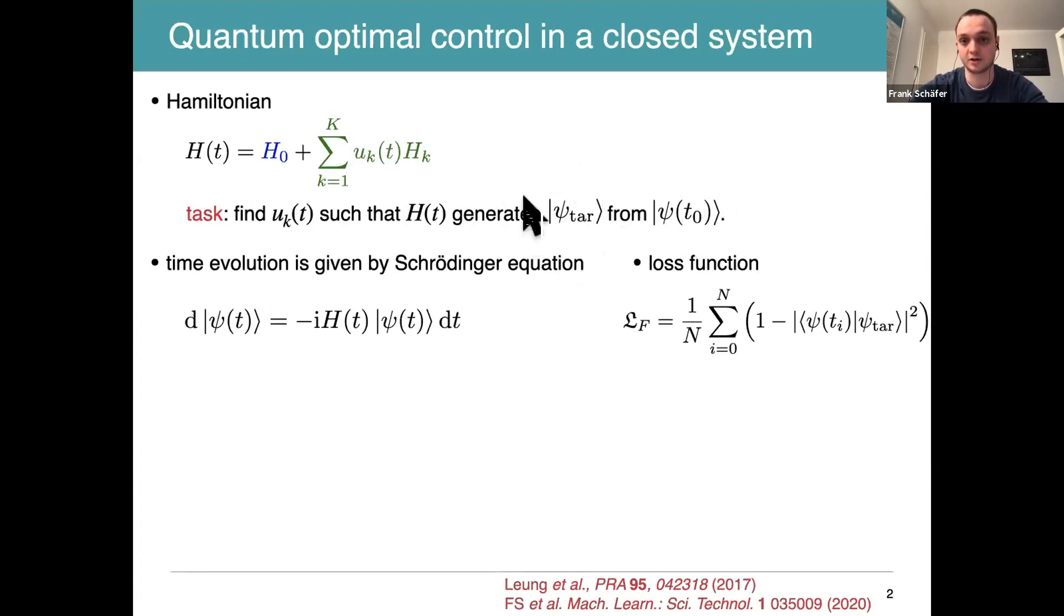This notation means the state is like a vector in the Hilbert space. In the case of a closed quantum system, the time evolution is given by the Schrödinger equation, which is just an ordinary differential equation that you have to solve starting from the initial condition psi of t0.